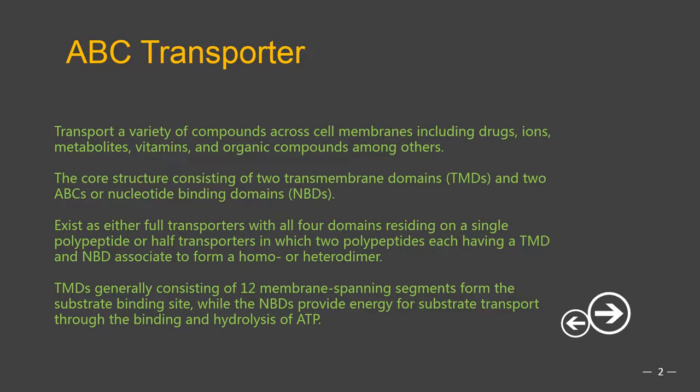In eukaryotes, ABC transporters exist as either full transporters with all four domains residing on a single polypeptide, or half transporters in which two polypeptides each having a TMD and NBD associate to form a homo or heterodimer. The two core TMDs generally consisting of 12 membrane spanning segments form the substrate binding site and its translocation pathway across the membrane, while the NBDs provide energy for substrate transport through the binding and hydrolysis of ATP.